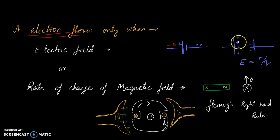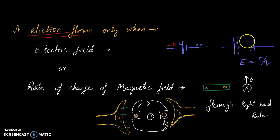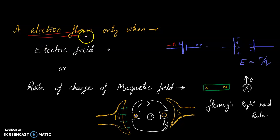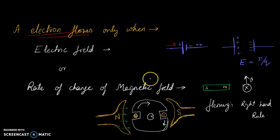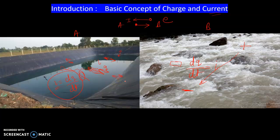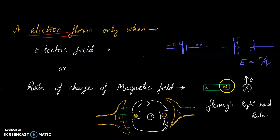If there is a separation of positive and negative charges, then we can say there is a potential difference between them. We will learn that this is the electric field, which is the force divided by Coulomb — the force at which the electron is being attracted by the positive charges. Electron will flow only when there is an electric field, or when there is a rate of change of magnetic field. In the example of oscillations, the water will shake, and this can also create the flow of water. Flow of water is the current. So here this is just an analogy.